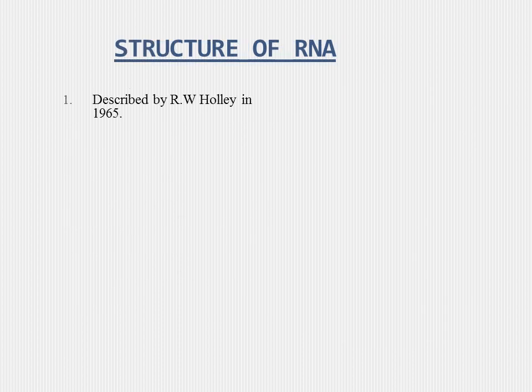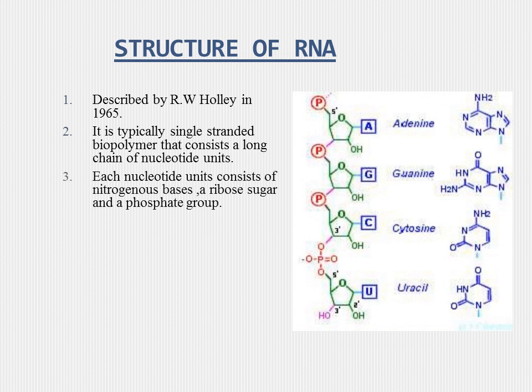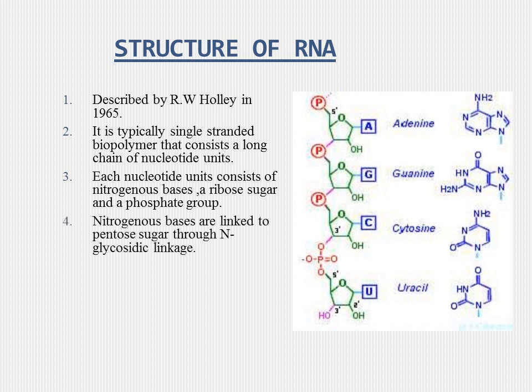Structure of RNA. It was described by R.W. Holley in 1965. It is typically a single-stranded biopolymer that consists of a long chain of nucleotide units. Each nucleotide unit consists of nitrogenous bases — adenine, guanine, cytosine, uracil — a ribo sugar, and a phosphate group. Nitrogenous bases are linked to pentose sugar through N-glycosidic linkage. Nucleotides are linked through 3' to 5' phosphodiester bond.